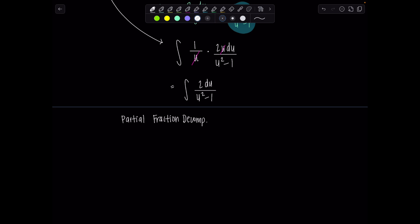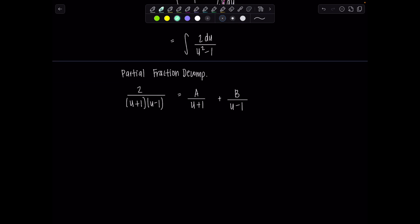And I'm going to leave the 2 in the numerator. It'll make it nice. So we have u plus 1, u minus 1. Since the denominator is a difference of squares, each of those is a linear factor. So the decomposition will have the form a over u plus 1 plus b over u minus 1. Okay, multiply everything through by the LCD, which is u plus 1, u minus 1.